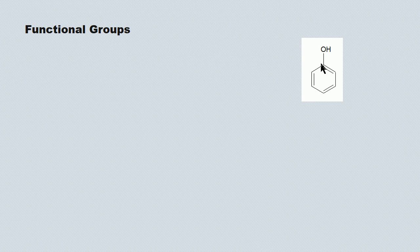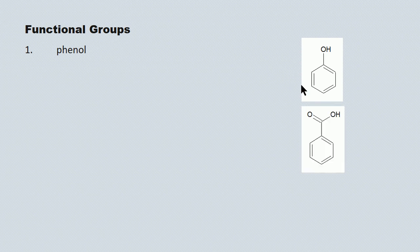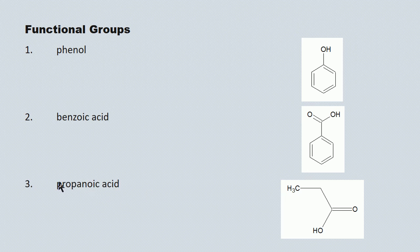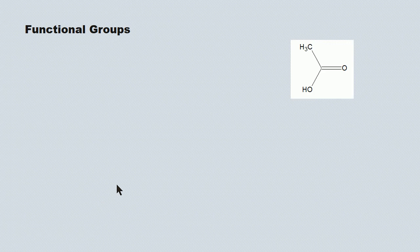A benzene ring with a hydroxyl group attached has the unique name phenol. A similar-looking molecule — a benzene ring with a COOH acid group — is known as benzoic acid. A three-carbon backbone with a carboxyl group at the terminal end is propanoic acid — no number required, as all carboxylic acids are terminal and numbered one. A two-carbon acid is ethanoic acid, the vinegar we discussed previously.